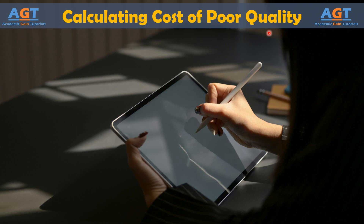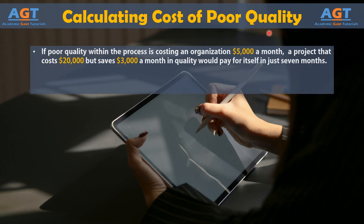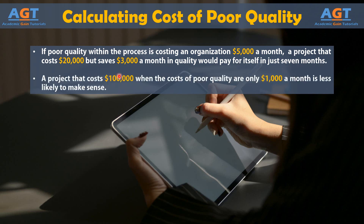At a project or process level, the cost of poor quality might help determine budgets for improvement. If poor quality within the process is costing an organization $5,000 a month, a project that costs $20,000 but saves $3,000 a month in quality would pay for itself in just 7 months. On the other end, a project that costs $100,000 when the costs of poor quality are only $1,000 a month is less likely to make sense.